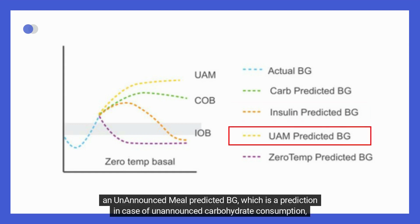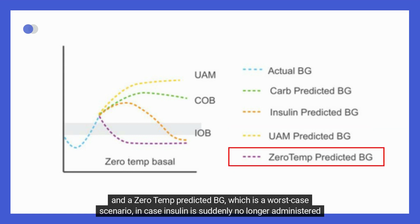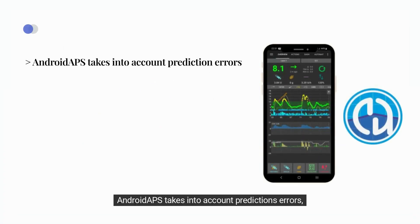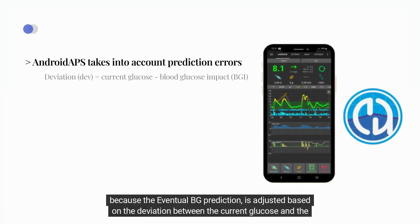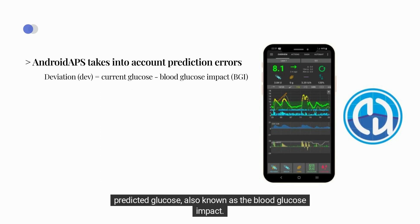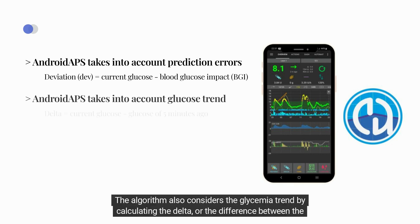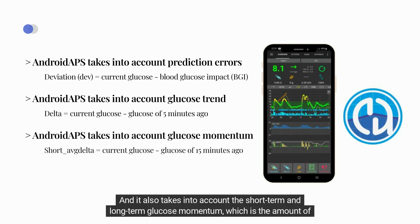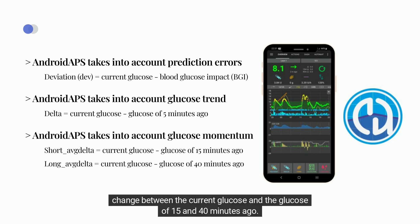Android APS also calculates an unannounced meal predicted BG, which is a prediction in case of unannounced carbohydrate consumption, and a zero-temp predicted BG, which is a worst-case scenario in case insulin is suddenly no longer administered or carbohydrates are no longer absorbed. The algorithm accounts for prediction errors, adjusting the eventual BG prediction based on the deviation between the current and predicted glucose, known as the blood glucose impact. It also considers the glycemia trend by calculating the delta, or difference between current and past glycemia, as well as short-term and long-term glucose momentum — the amount of change between the current glucose and the glucose of 15 and 40 minutes ago.